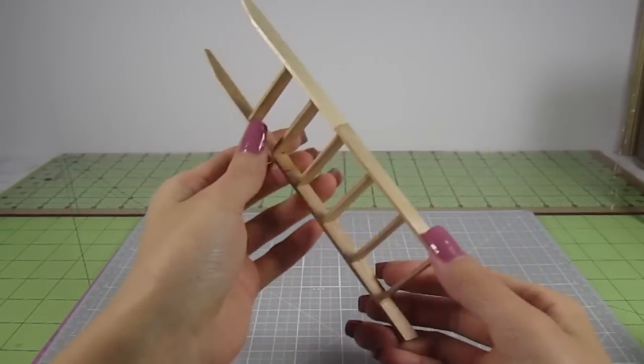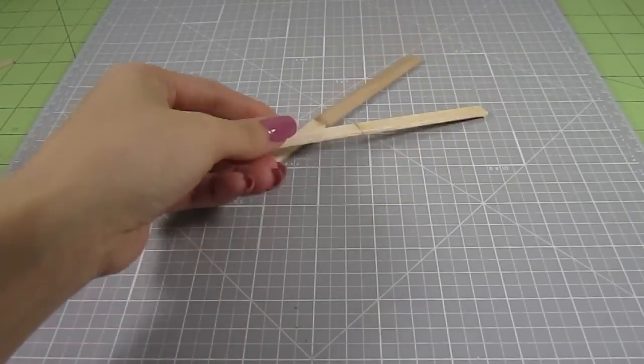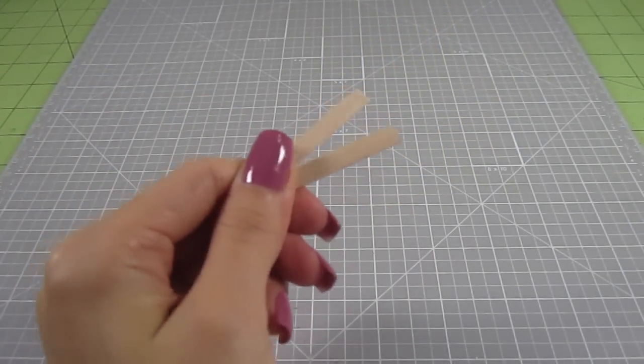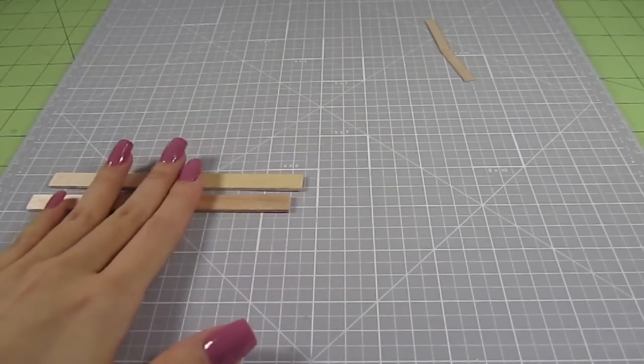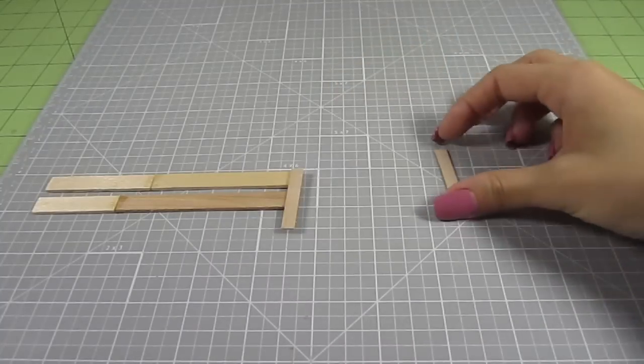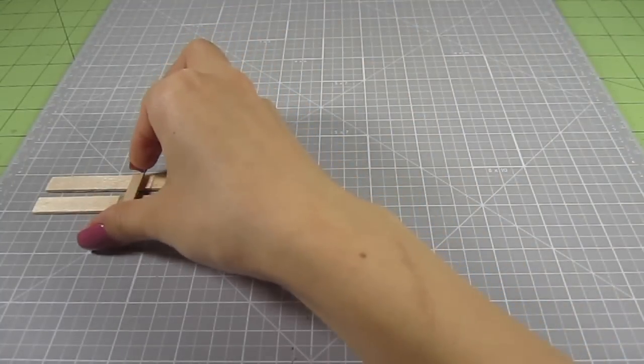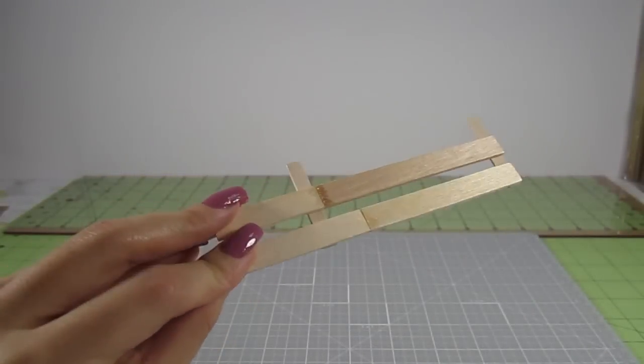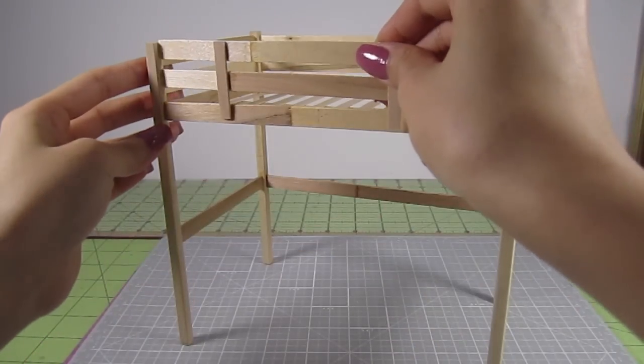Okay, before we attach the ladder to the bed, we need to make one more piece. Create 2 5 inch pieces from popsicle sticks. Then grab a coffee stirrer and cut out 2 1 and a half inch pieces. Line the 5 inch sticks up vertically. Then place one coffee stirrer piece at one end and the other one 3 inches away from that. Glue them in place. Once that's dry, attach it to the open side of the bed.